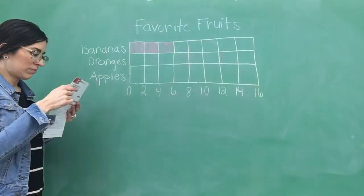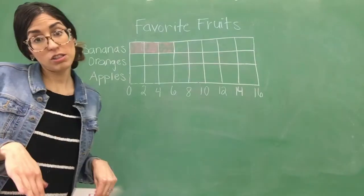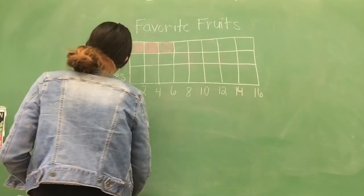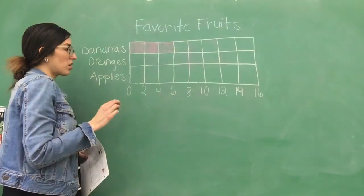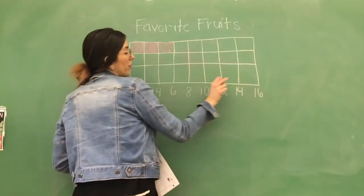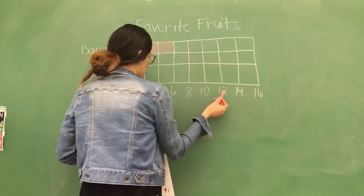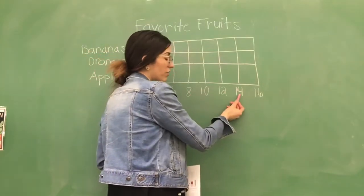All right, the next one is oranges. So, this time, 13 students loved oranges, okay? So, we're going to do the pink one again. So, 13. So, we're going to go a little bit further down. So, we have 0, 2, 4, 6, 8, 10, 12. Then, it goes to 14.